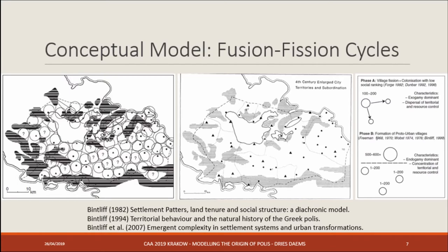The first element is fusion-fission cycles, a concept drawn from the work of John Bintliff. In his model of polis formation in Boeotia on mainland Greece, in early Iron Age times there was a dispersed settlement landscape. Throughout time, communities started filling in the landscape with new communities emerging until the landscape was pretty much filled, and then by classical times we see the first emergence of polis communities, with some communities growing in size.